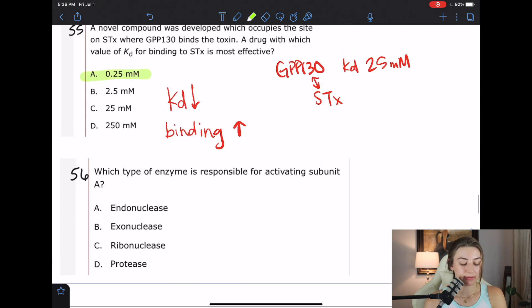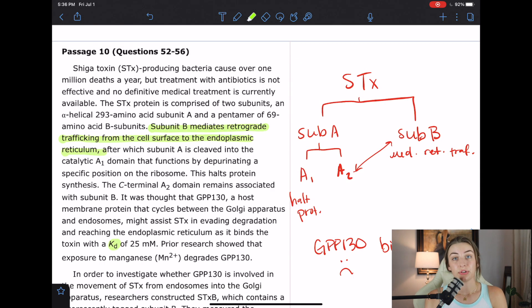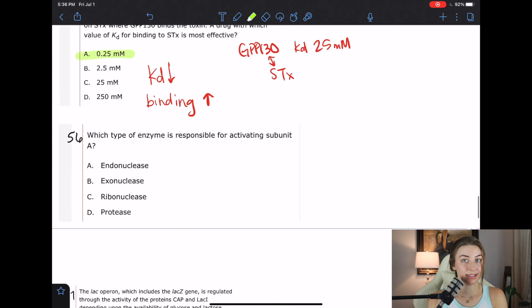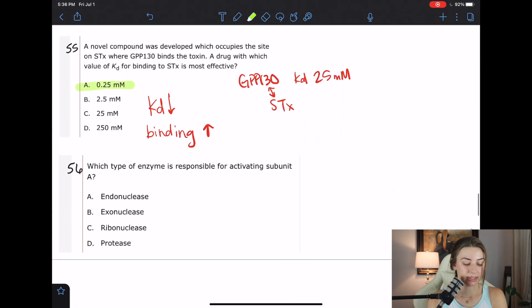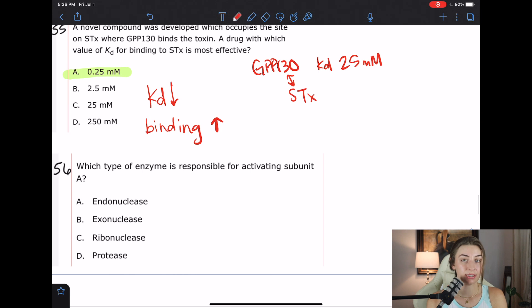Question 56 says, which type of enzyme is responsible for activating subunit A? So our first question to ourselves should be, how is subunit A activated? If we go back up into the passage, we can see that it's cleaved. Subunit A is a protein and it's getting cleaved and that's what activates it. So now our question is simplified down to what type of enzyme cleaves proteins? That would be a protease.